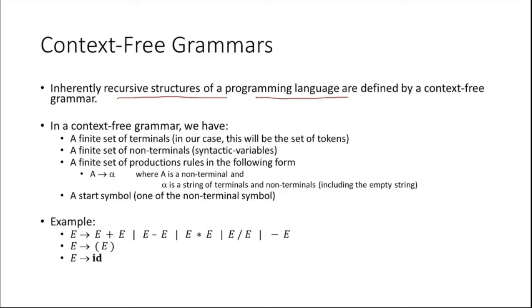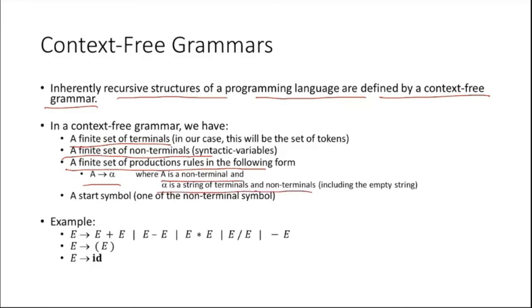The inherently recursive structure of programming languages is defined by context-free grammars. It is recursive because in a program there are very few syntax structures, and most instructions we write in source code have similar structure — they arrive recursively. In a context-free grammar we have a finite set of terminals, a finite set of non-terminals, and a finite set of production rules in the form A to alpha.